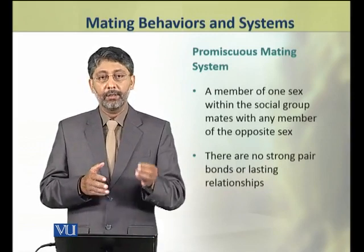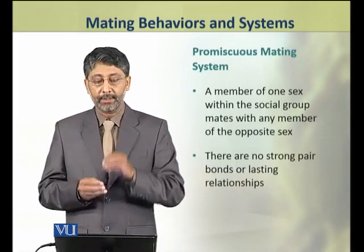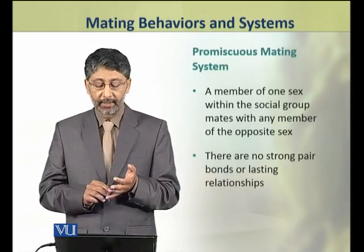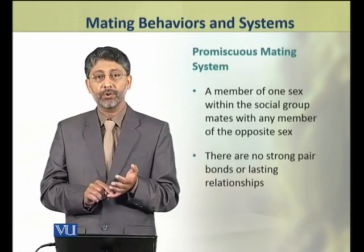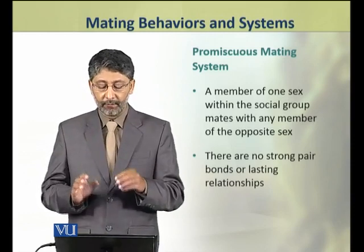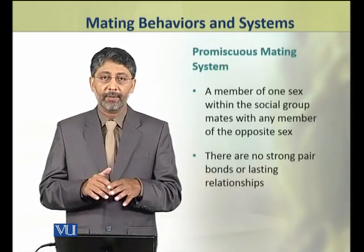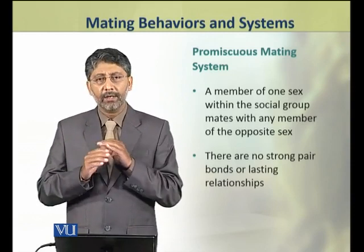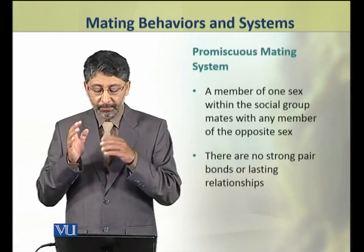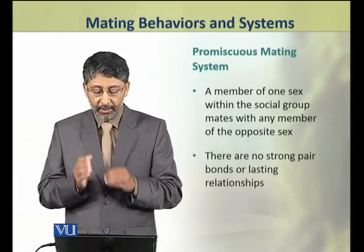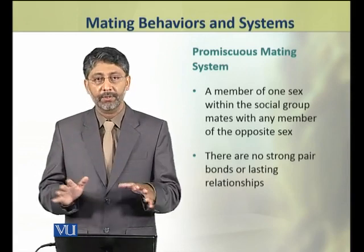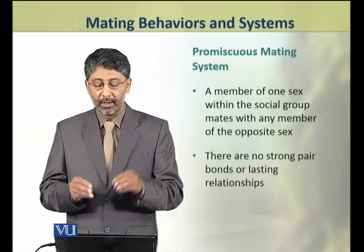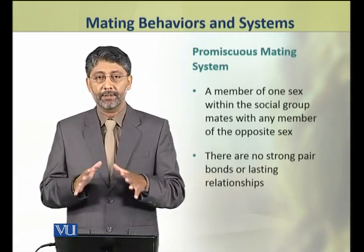In a promiscuous mating system, a member of one sex within a social group mates with any member of the opposite sex. There are no strong pair bonds or lasting relationships among the members of a promiscuous mating system.